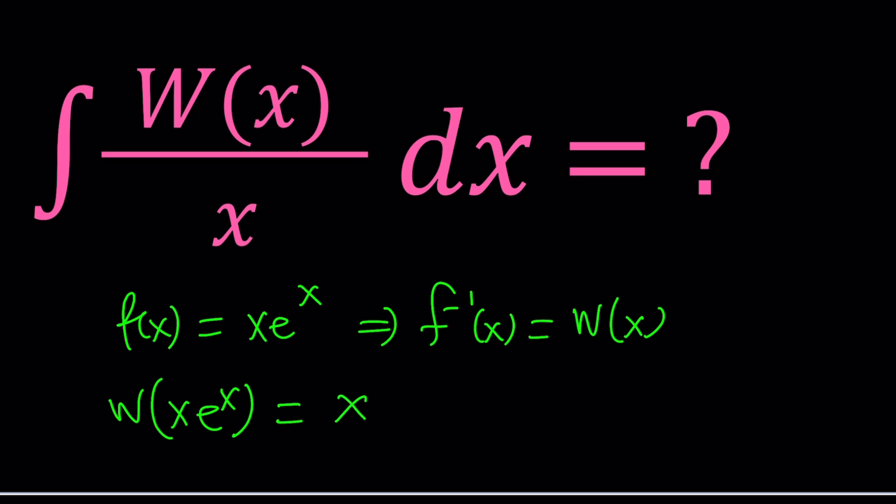So you know that whenever we have something like e to the x, we can go ahead and ln it, and that'll give us x. So this is the logarithm function. But with this one, we have what is called the product log.